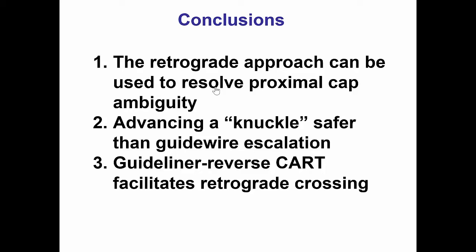In summary, this case shows that the retrograde approach can be used for resolving proximal cap ambiguity. This was done by advancing a retrograde knuckle wire all the way to the proximal right coronary artery, which is safer than advancing guide wires that are not knuckled because it is more likely to follow the vessel curvature instead of exiting the vessel architecture. Finally, using a guideliner can help facilitate reverse CART, and using the larger 8-French guideliner or any guide catheter extension can be even more efficient in optimizing the likelihood of reverse CART succeeding.